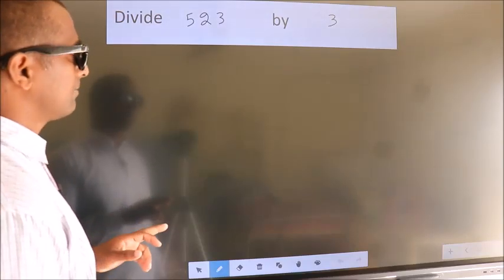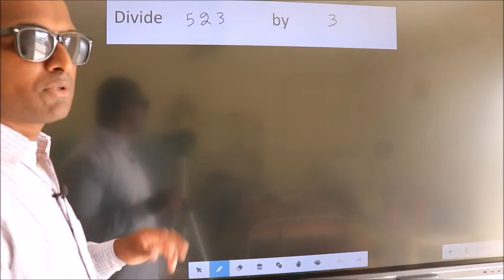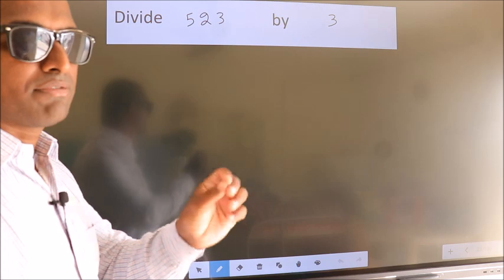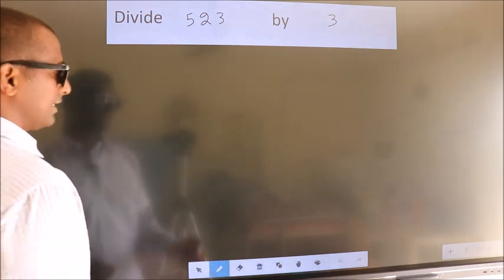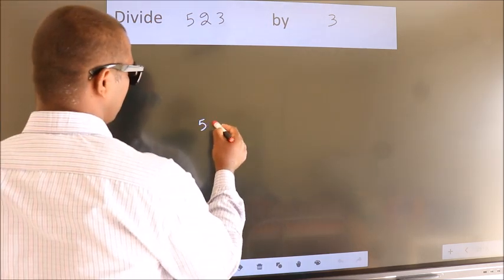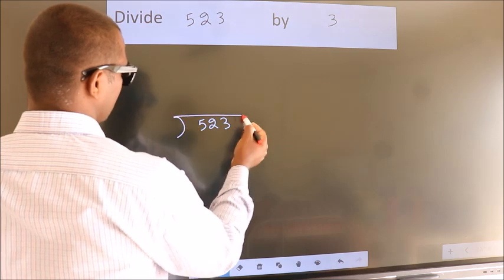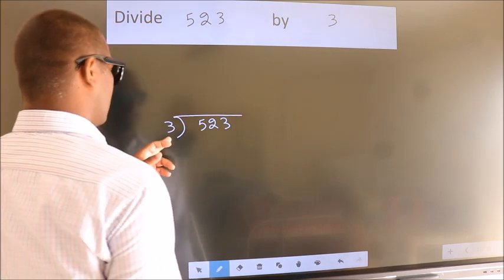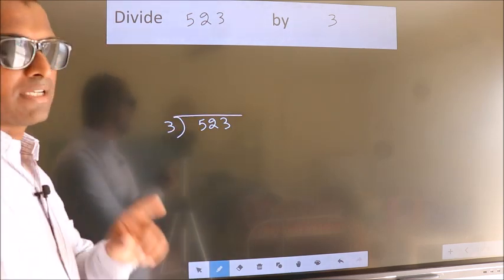Divide 523 by 3. To do this division, we should frame it in this way. 523 here, 3 here. This is your step 1.